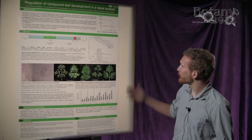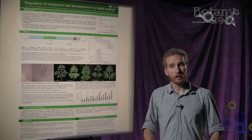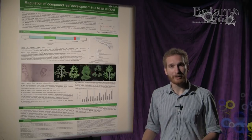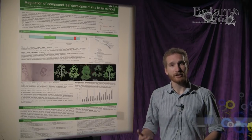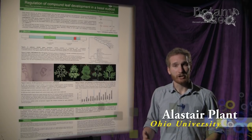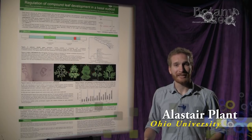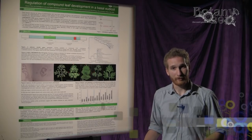This poster is discussing regulation of compound leaf development in a basal eudicot species, Eschscholzia californica, also known as the California poppy.